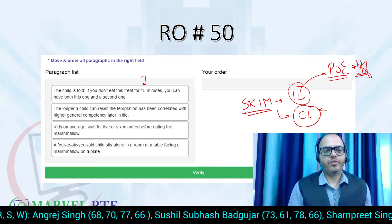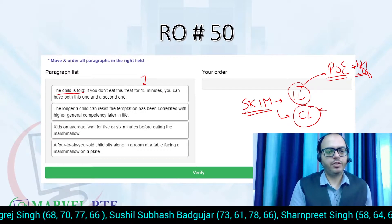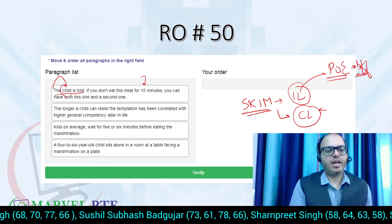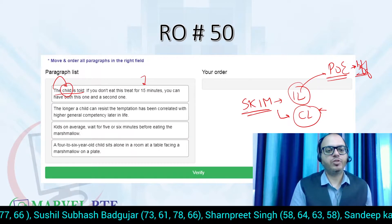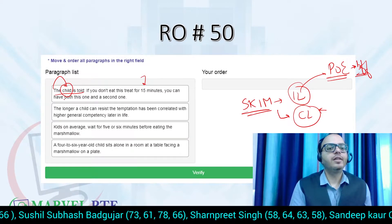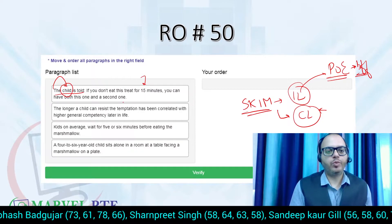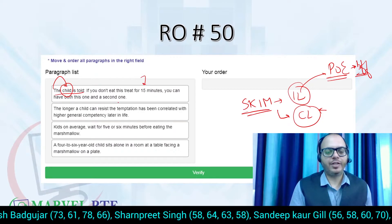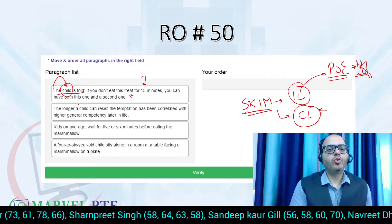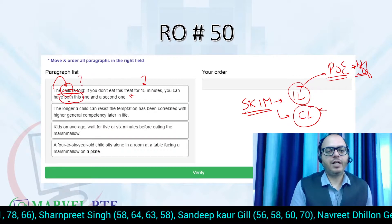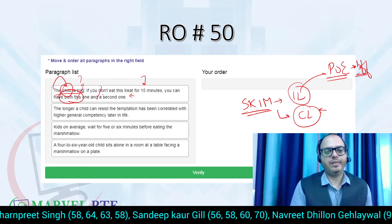Let's find the independent line. 'The child is told' — the word 'child' means a child has already been mentioned before, so this cannot be the independent line. 'If you don't eat this for 15 minutes, you can have both this one and a second one' — 'both this one' refers to something already mentioned, so we don't know what it is. Through process of elimination, this also cannot be the independent line.